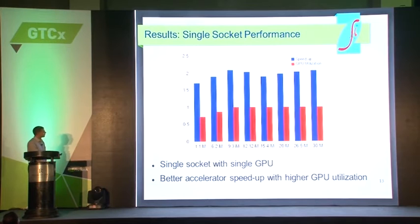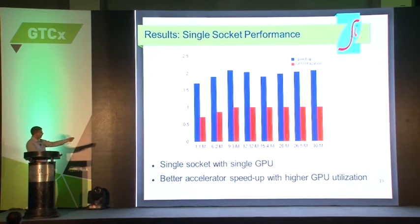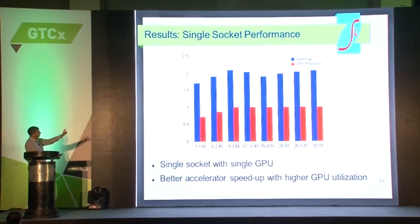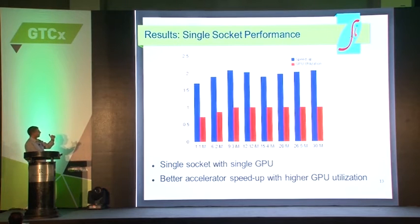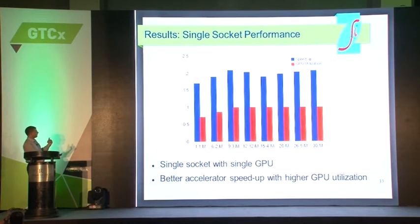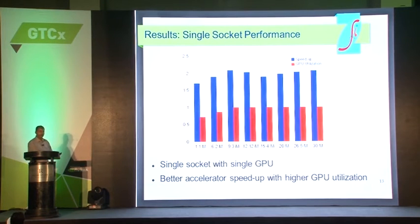We started with single-socket performance with a single GPU. The blue bars show the accelerator speedup obtained for different workloads, starting from 1.1 million volumes on the x-axis all the way up to 30 million. The red bars show the GPU utilization. As the problem size per node increases, the GPU utilization also increases, and once the GPU utilization becomes better, the accelerator speedup also improves — from about 1.75 up to about 2.2.